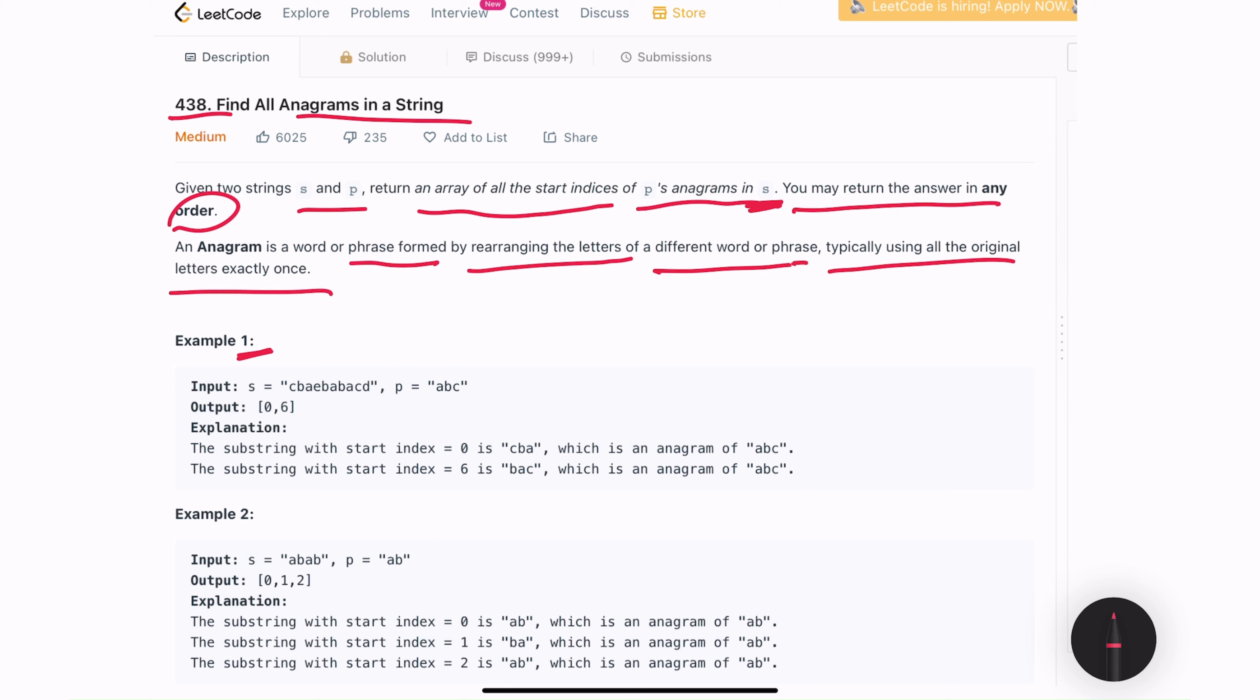If you are still not clear what anagram is, let's look at example number 1 and understand it. Here, we are given two strings, s and p. p contains abc and in s, we have a bunch of letters. And between p and s, we need to find out if we have set of consecutive letters, which is an anagram of abc.